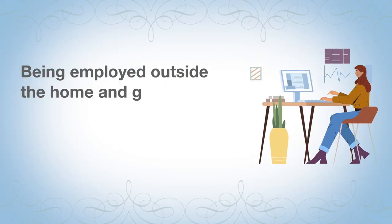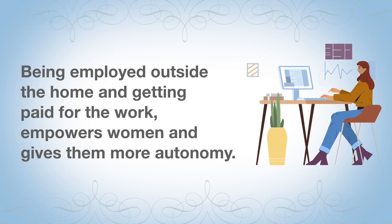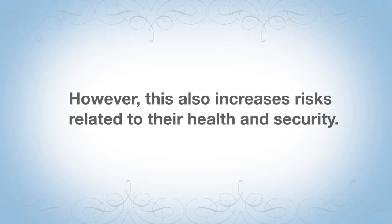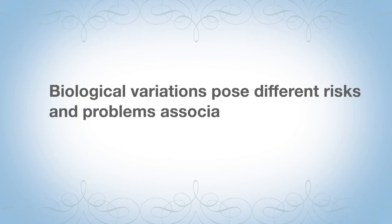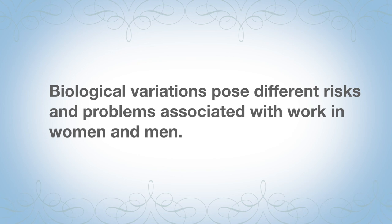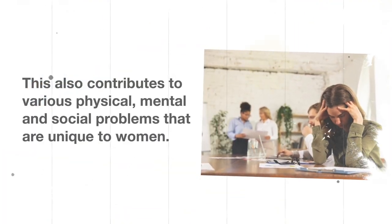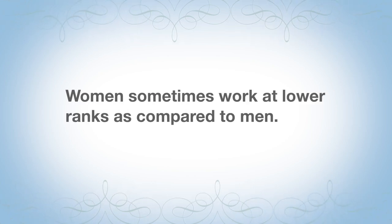Being unskilled also puts women at higher risk — for example in mechanical work, if you don't properly know the working guidelines for operating a machine, you may be at higher risk. Being employed outside the home is definitely empowering and gives women more autonomy, but it also increases health and security risks. Biological variations pose different risks and problems associated with work. Women also do housework in addition to paid work, contributing to various mental, physical, and social problems unique to women, including reproductive problems during pregnancy.